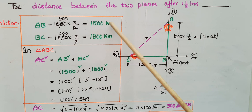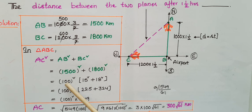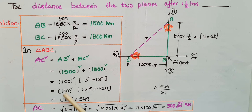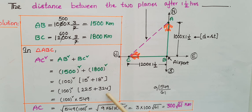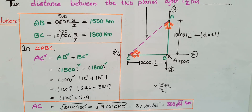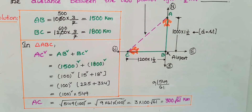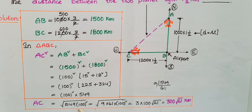So AC² = 1500² + 1800². Here, 100² is common: 100² × (15² + 18²) = 100² × (225 + 324) = 100² × 549. Therefore AC = √(549 × 100²).